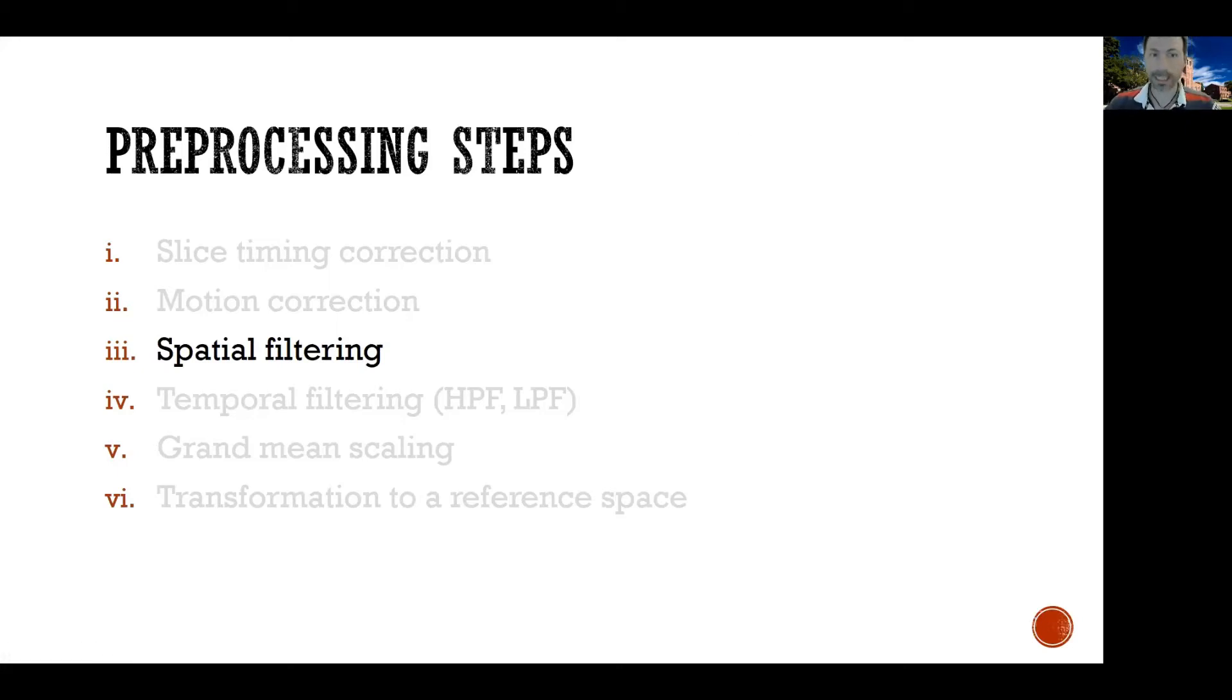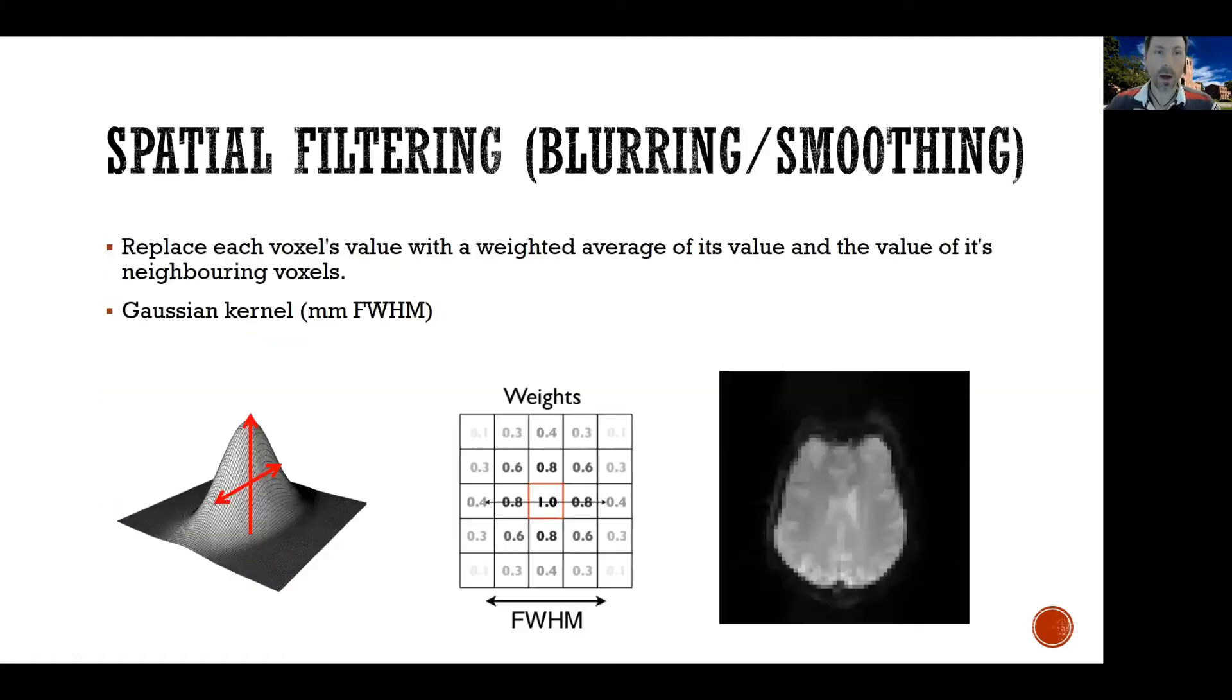The next step of preprocessing that is typically done after motion correction is spatial filtering, also known as blurring or smoothing. The idea is to take the value inside each voxel of the brain and replace it with a weighted average of its own value and the value of the voxels around it.